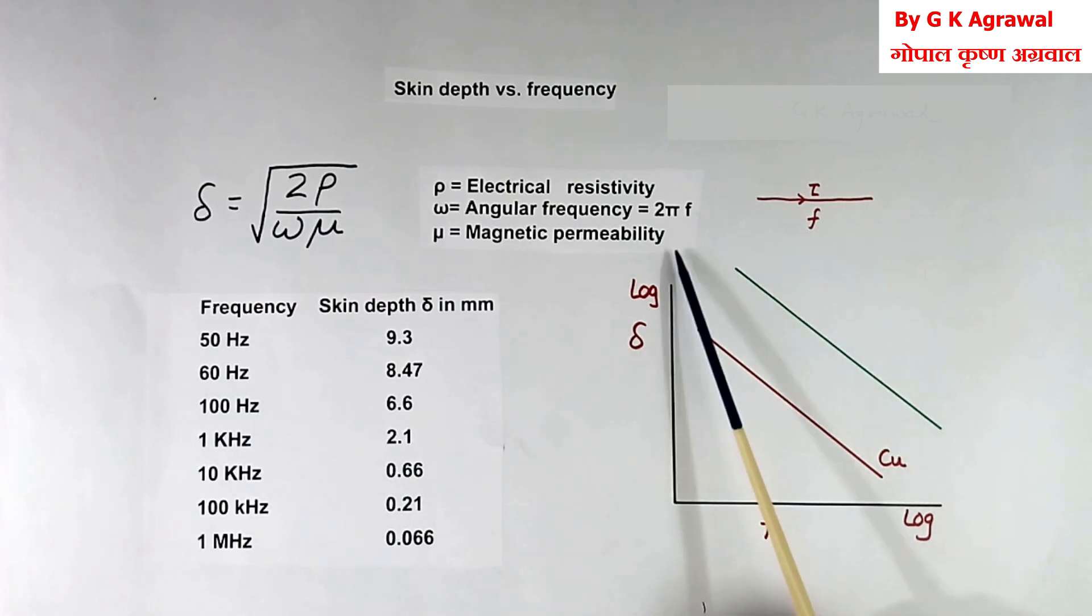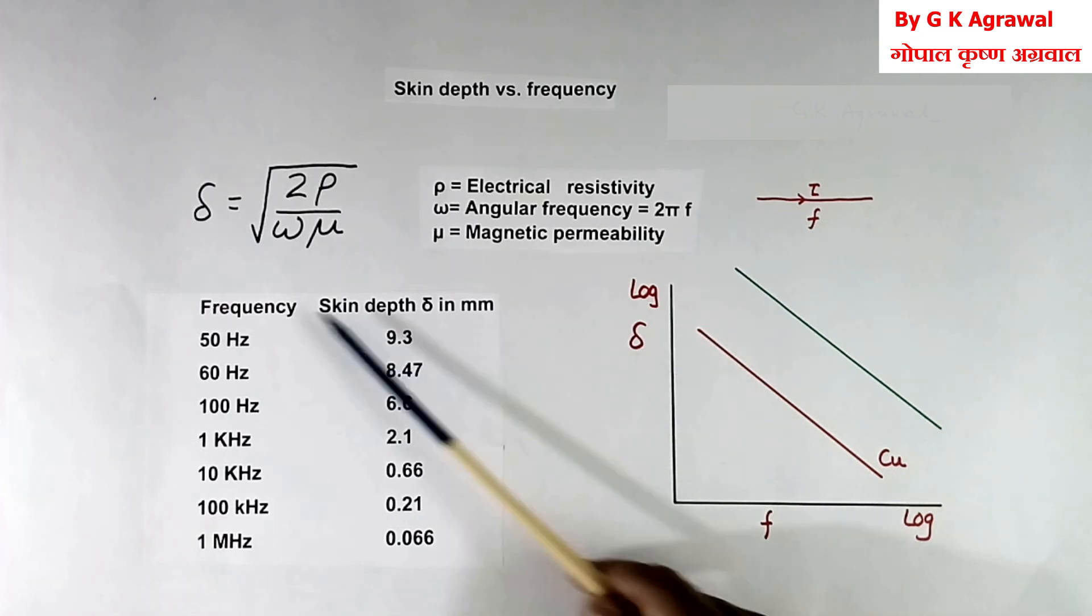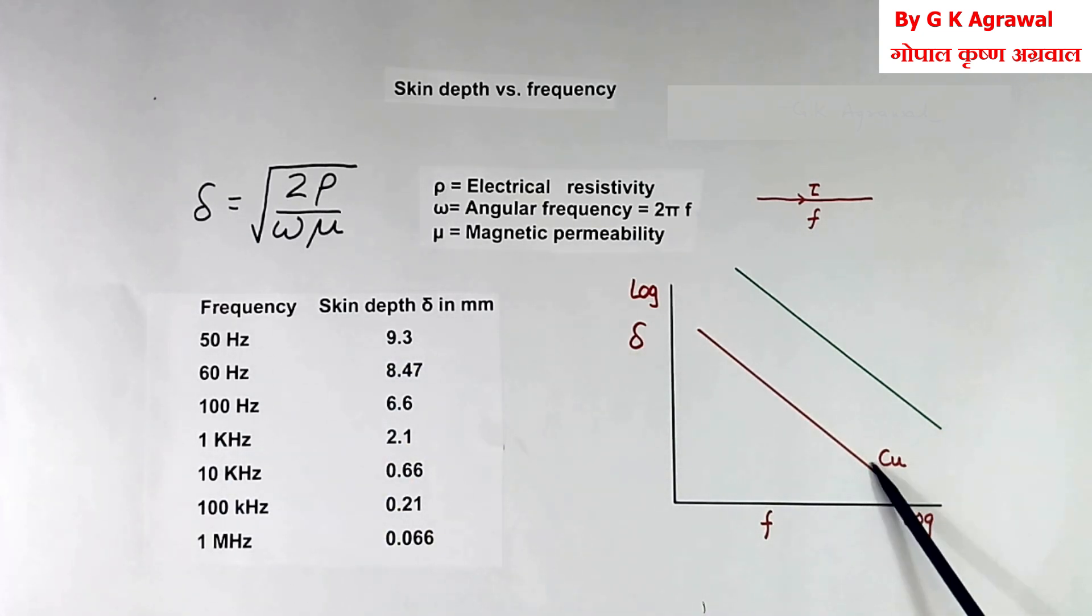Same thing, if you plot in the log scale, this is frequency, this is delta. This I have calculated for copper. So this one will come like this. This is for copper.